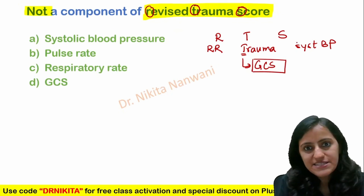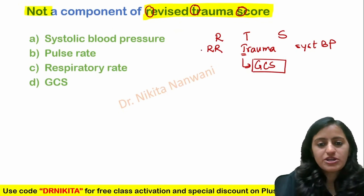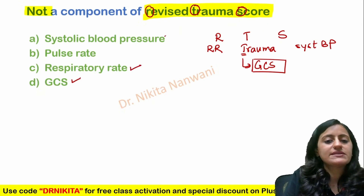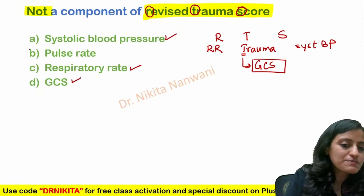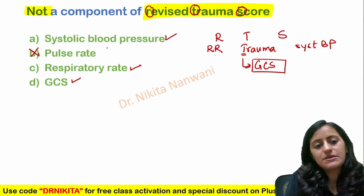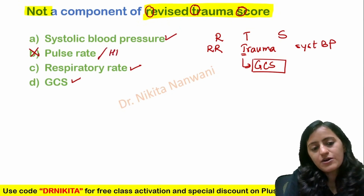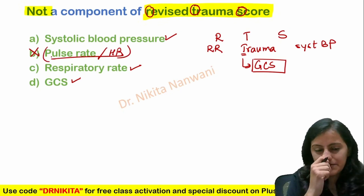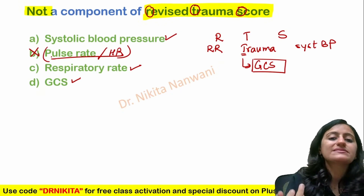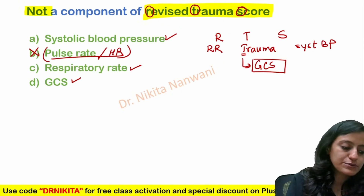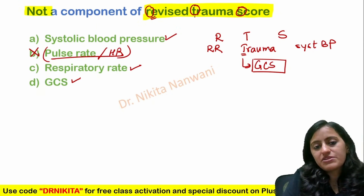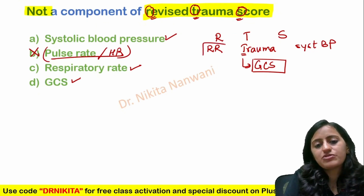What is the first score that we do in a patient of trauma? It's GCS. So the components are: respiratory rate, GCS, and systolic blood pressure. What is NOT included is the pulse rate or heart rate — that is not included.